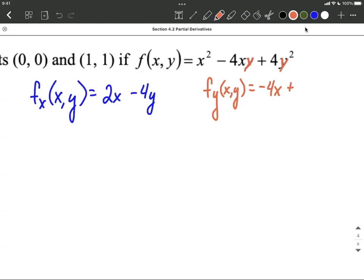And finally, we have that derivative of that last term. Well, we're going to use the power rule on this, bring our exponent down and multiply it by the 4, so that's going to make 8, reduce the exponent by 1, and we get y to the first power.